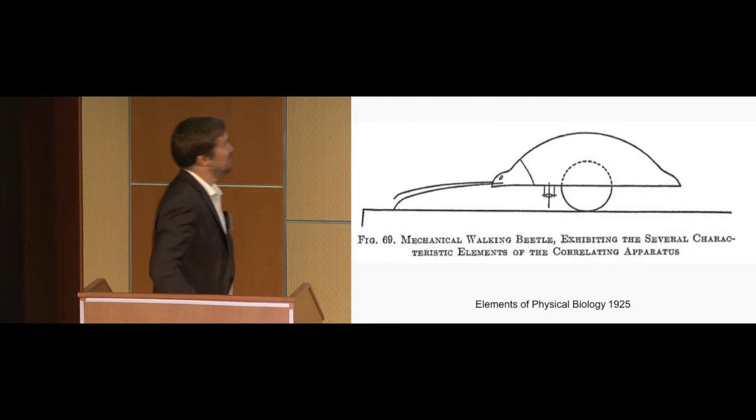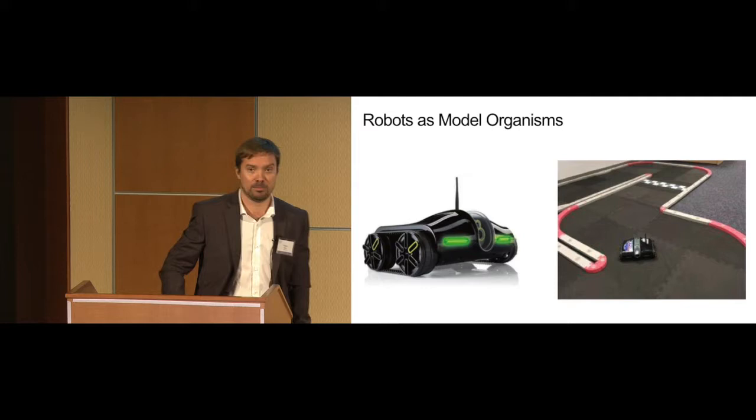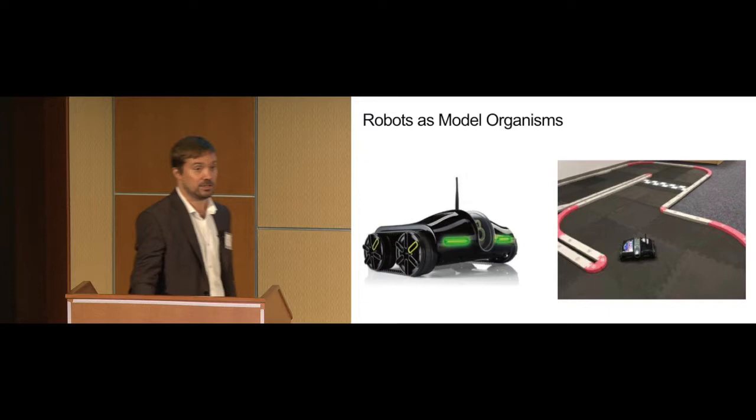In 1925, I found this walking beetle, mechanical walking beetle. So I'd be very happy if in our group we could get something that has the sophistication and complexity of a beetle. This is what we work with. It's a small-scale car. It's got a little camera, microphone, wireless connection, and then we run different neuro-inspired algorithms to see if we can get this thing to control itself.